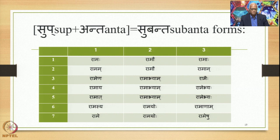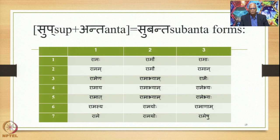These are the Subanta forms. Rama is a Pratipadika to which we add the Sup suffixes, and then we derive these 21 Subantas: Ramaha, Ramau, Ramaha; Ramam, Ramau, Raman; Ramena, Ramabhyam, Ramaihi; Ramaya, Ramabhyam, Ramebhyaha; Ramat, Ramabhyam, Ramebhyaha; Ramasya, Ramayoho, Ramanam; Ramayam, Ramayoho — these are the 21 Subanta forms, i.e., the 21 Vibhaktianta forms, forms at the end of which appears a Sup Vibhakti Pratyaya.